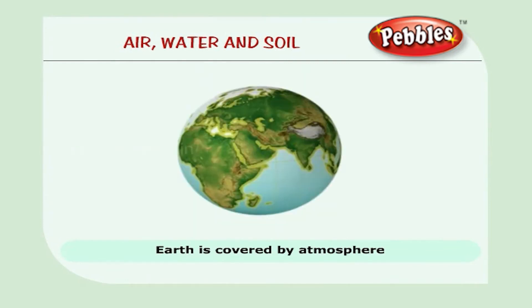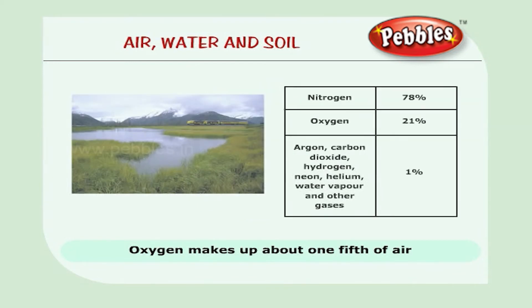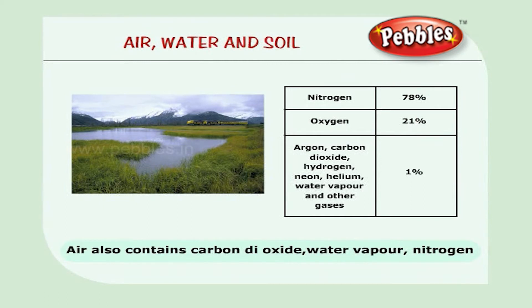Our earth is covered by an enormously thick layer called the atmosphere. Oxygen makes up about one fifth of the air around us. It also contains carbon dioxide, water vapor, nitrogen and many other gases.